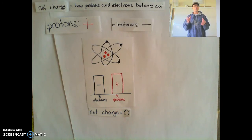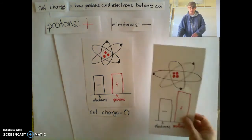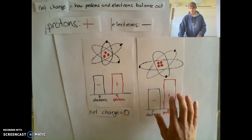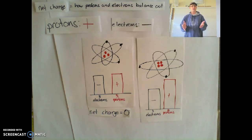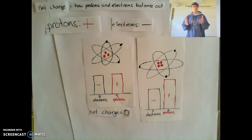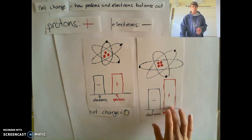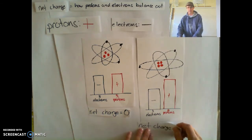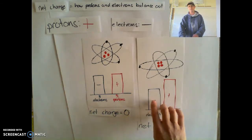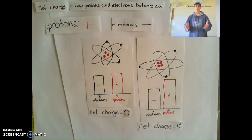What would happen if an atom had four protons and three electrons? We don't have the same number of electrons and protons anymore, so they can't totally balance each other out. We have more protons than electrons, so we're going to have a net charge that's positive, because some of the positive charge in the protons can't be balanced out by the electrons. In this case we have one more proton than electron, so this gives us a net charge of plus one. Four pluses and only three minuses leaves me with one plus — a net charge of plus one.